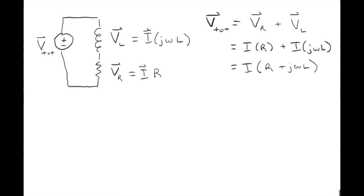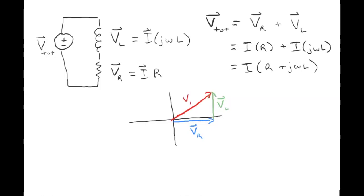Drawing this graphically in the complex plane: V_R is completely real, V_L is completely imaginary, and V_total is the vector sum of both. What we're going to measure is the angular difference between V_total and V_R. Since the inductance voltage is j·ω·L·i and the resistance voltage is R·i, the tangent of the angle is just the magnitude ω·L over R.